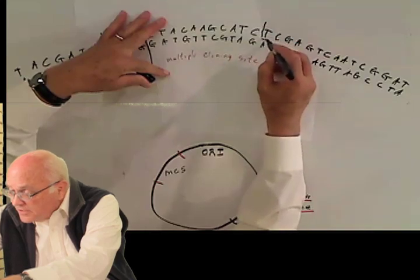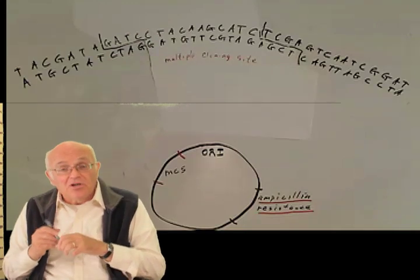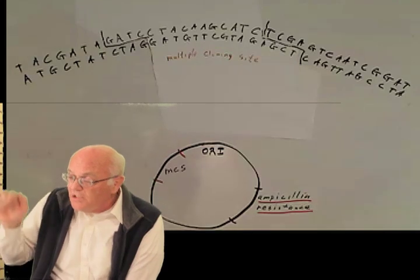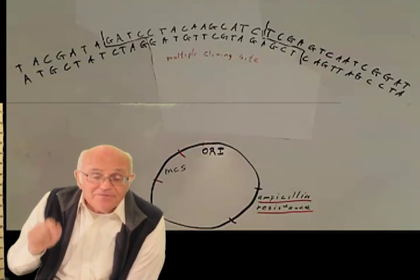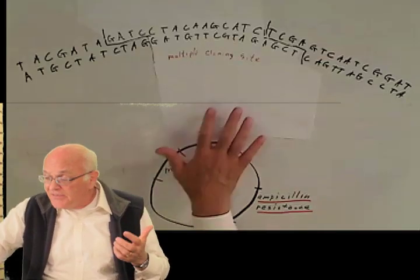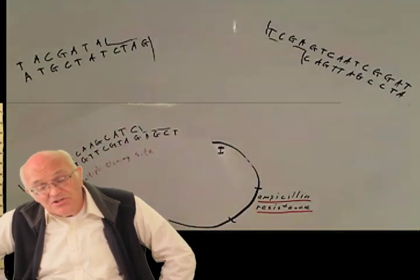So that when the bacterial artificial chromosome, when this vector is subjected to BamHI and SalI, two things happen. First of all, it is linearized. It's no longer circular. And the second thing is that it leaves these two sticky ends. And notice that the two sticky ends are not compatible with each other. So the molecular biologist buys the bacterial artificial chromosome, applies restriction enzymes to it, giving it sticky ends.